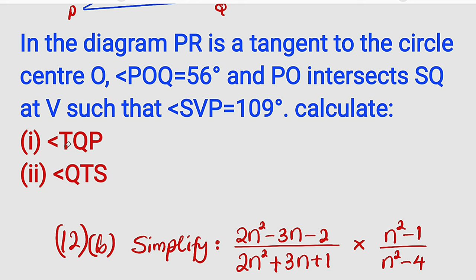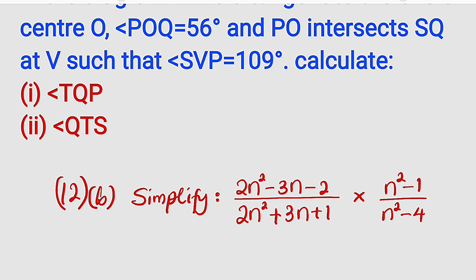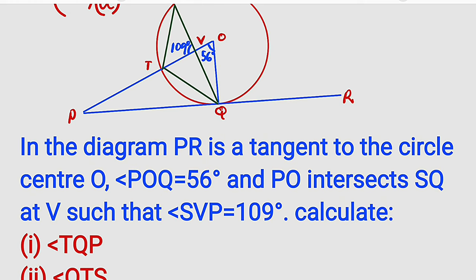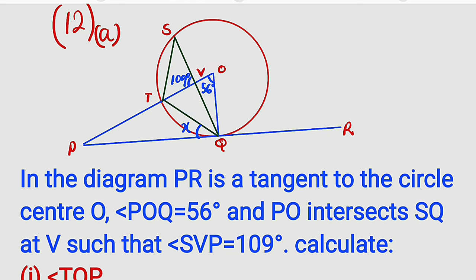We are asked to calculate the measure of angle TQP and QTS. Let's start with TQP — let us locate it and call it x. Before we continue, let me remind you of one theorem: the angle subtended at the center is twice the angle subtended at the circumference, if they are from the same chord. Here we have chord TQ subtending an angle at the center, and the same chord subtends another angle at the circumference, which means the circumference angle is half of the center angle.